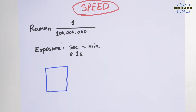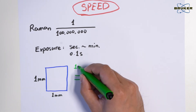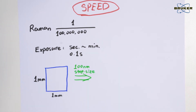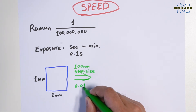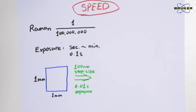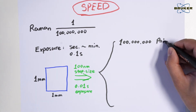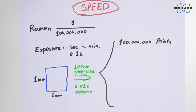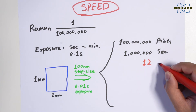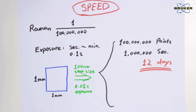Let's conduct a thought experiment. If I want to measure an area of 1 square millimeter with a 100 nanometer step size for the best possible resolution, and an extremely short exposure time of 10 milliseconds, I will need to measure 100 million points, or 1 million seconds, or 12 days. This is not practical at all. And keep in mind, this is based on a sample with a very strong Raman signal.